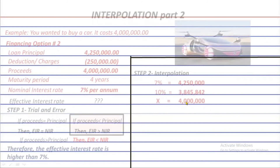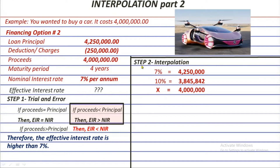After the trial and error, let's set up the interpolation. We put brackets and deduct 10% from 7%, giving negative 3%. Then 7% minus the unknown rate x is temporarily called d — remember, d equals 7% minus x. We place d in the appropriate positions, forming a fraction where the difference of the rates in the small bracket is the numerator and the difference in the bigger bracket is the denominator.